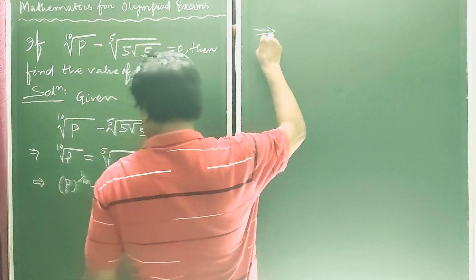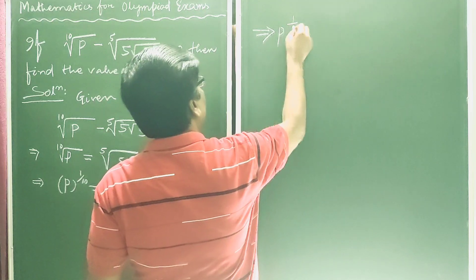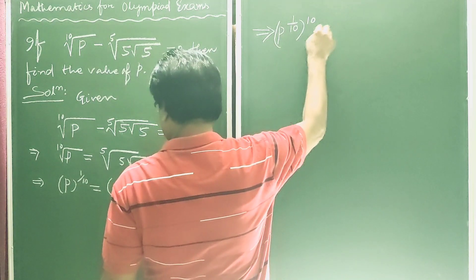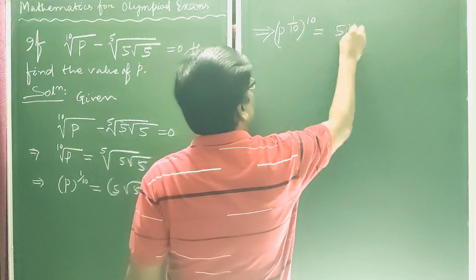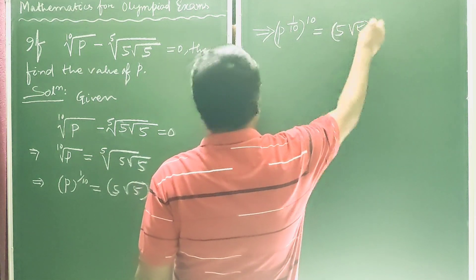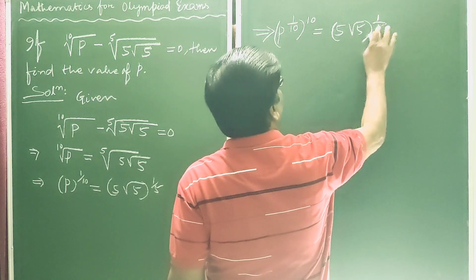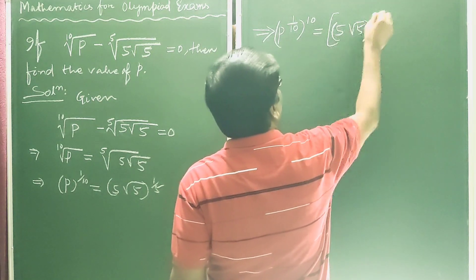This implies p to the power 1 by 10 to the power 10 is equal to 5 root 5 to the power 1 by 5 whole to the power 10.